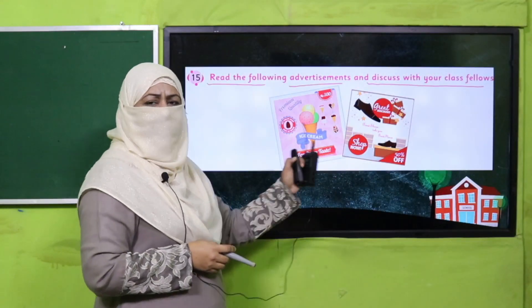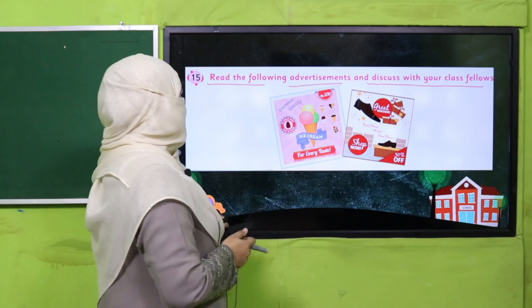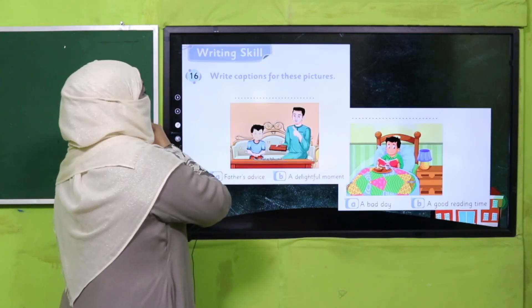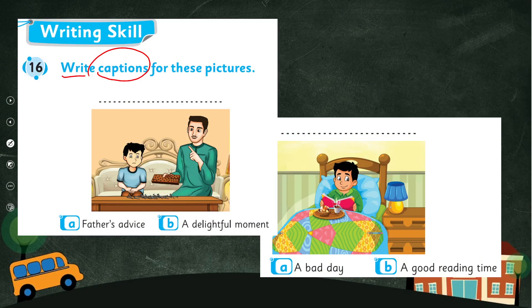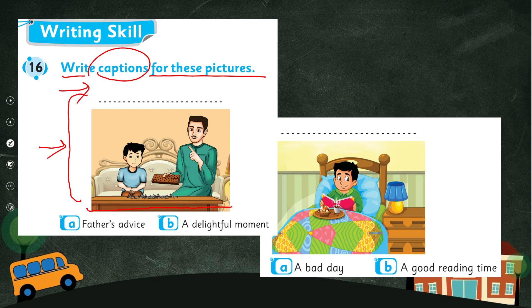My dear students, are you done reading these advertisements? Good job! Now it's time for question 16. You will write captions for the pictures. As I told you, there is an illustration and words — look at the picture carefully and select the better caption that matches the illustration. Write the correct caption over here and the other one for the next picture. Show this work to your teacher. If you find any difficulty, raise your hand, talk to your teacher, and write the correct caption. Pause the video, complete this task in your book, and then come back.